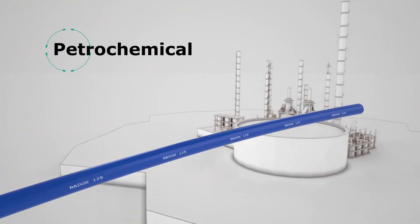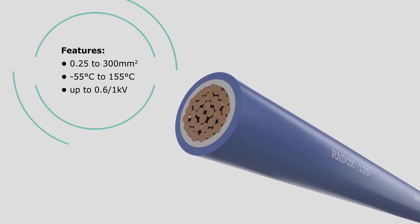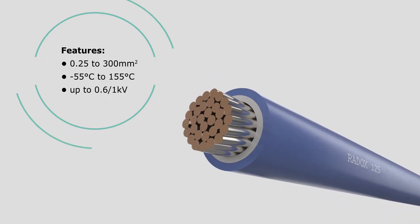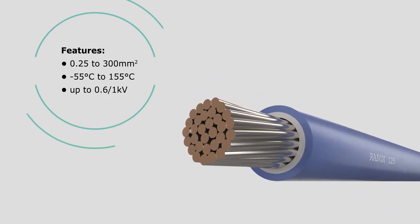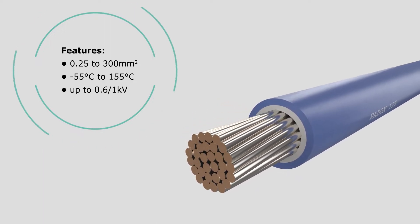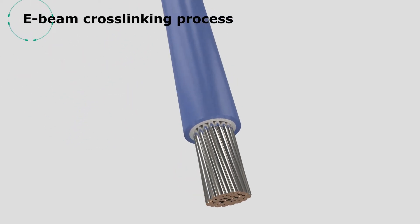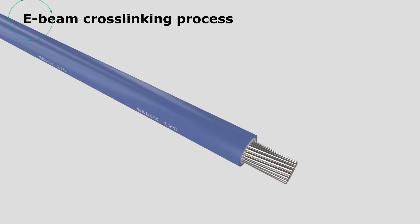The Redox 125 cable insulation is made with a unique E-beam cross-linking process, which significantly increases the cable's durability and reliability, while meeting strict requirements for operational safety.